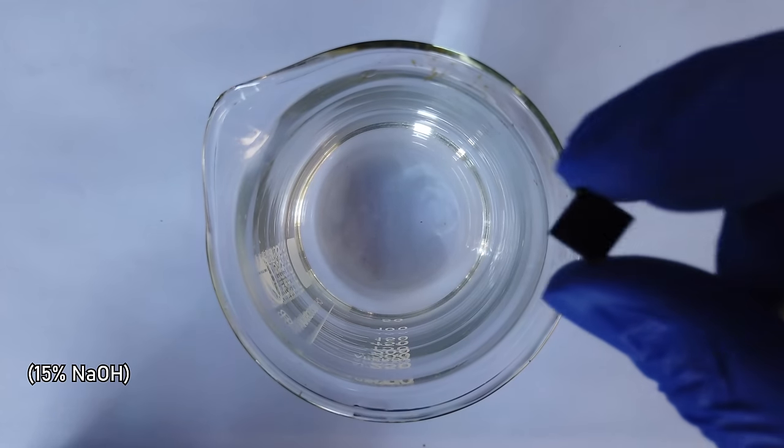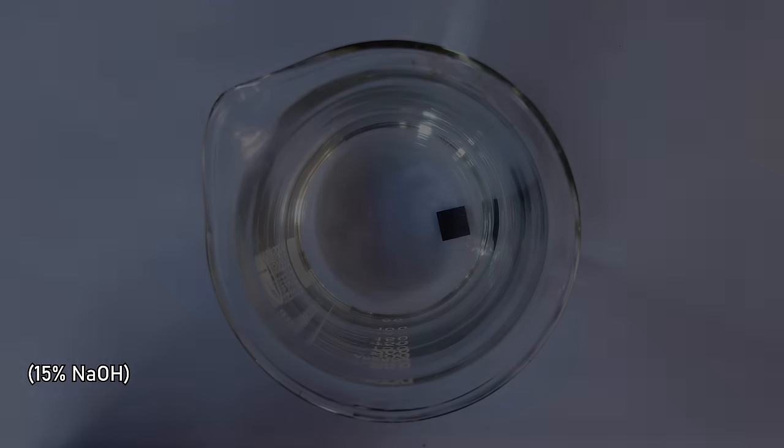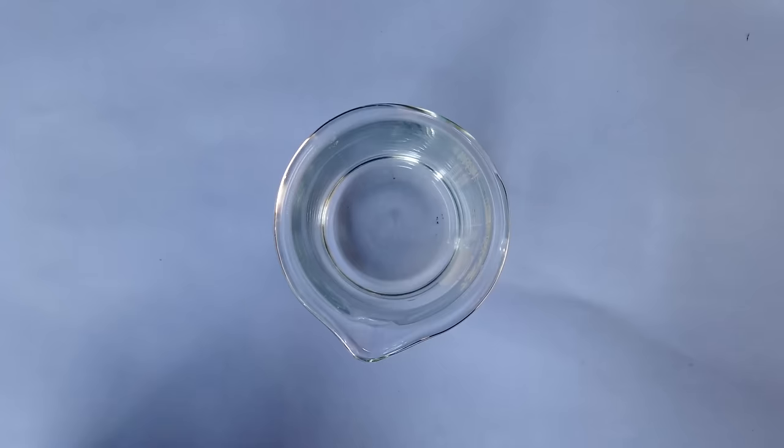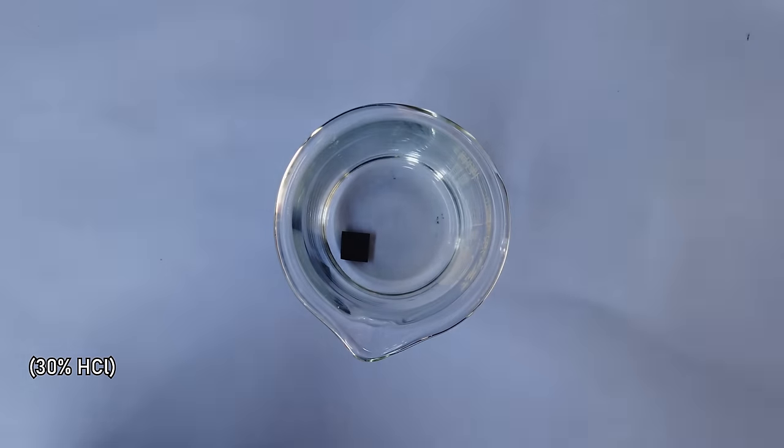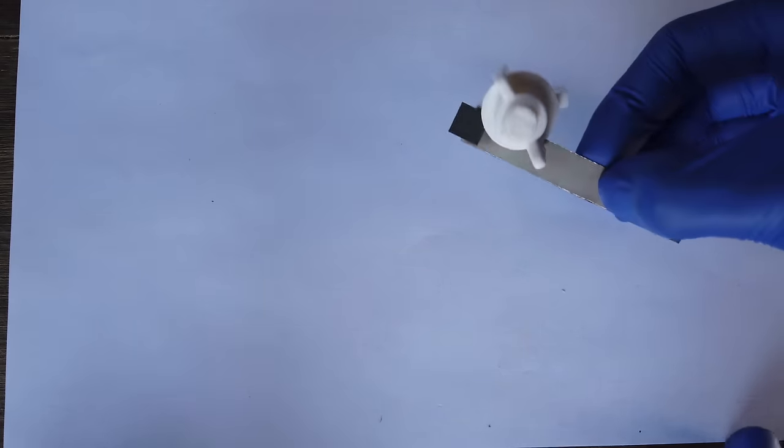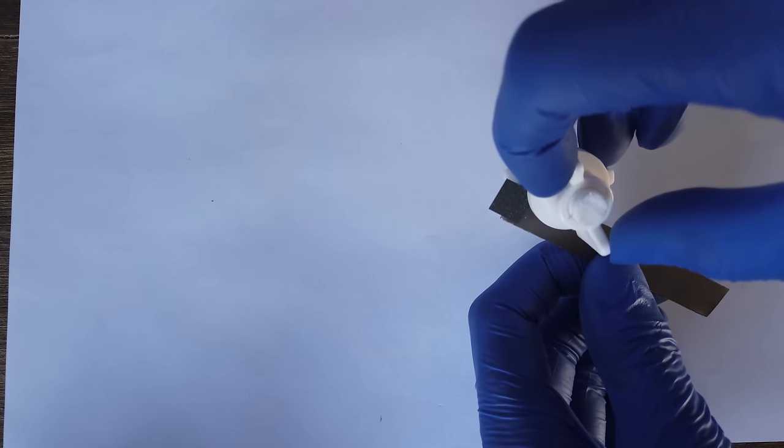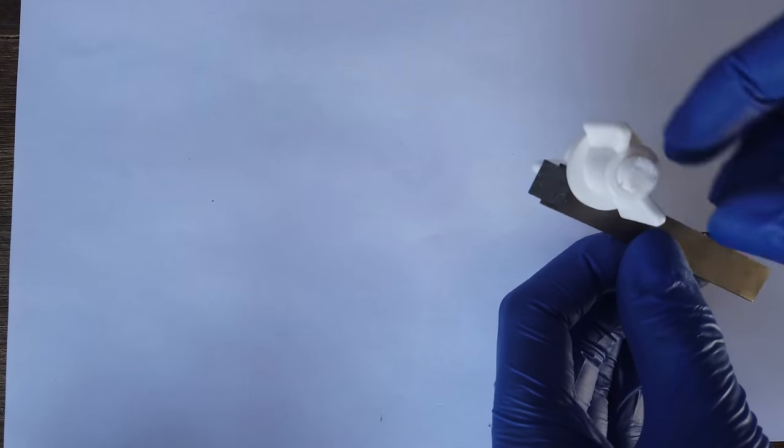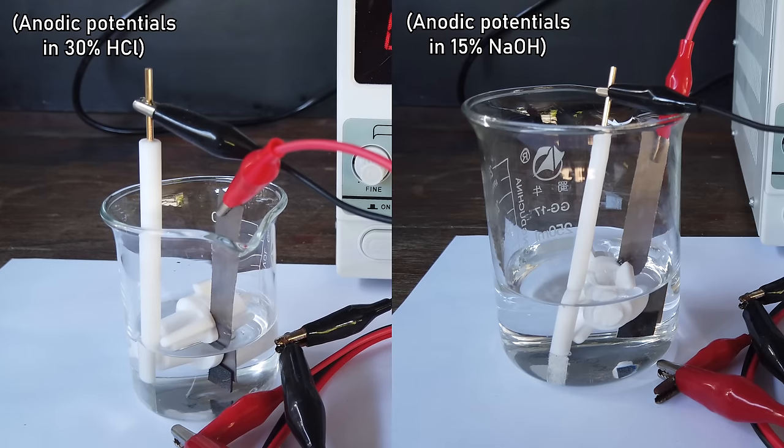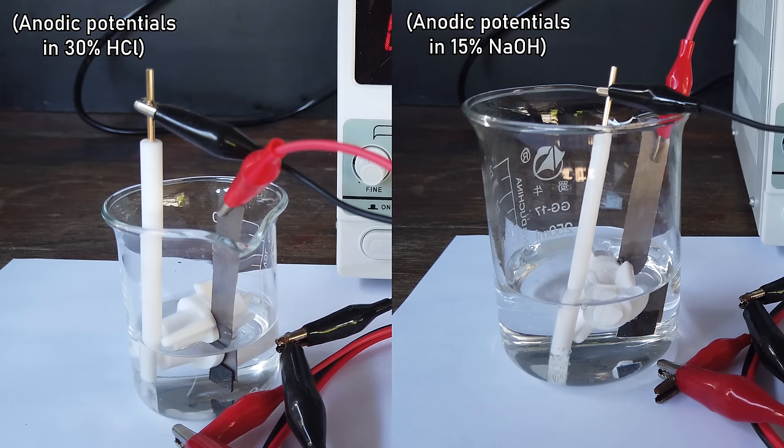We can chuck it in strong base, nothing. We can chuck it in strong acid, nothing. What other chemical tests are there that we could do? I suppose we can put it under strongly oxidizing potentials for both of these conditions as well. What I've done here is I've got a strip of titanium, a little thing to clamp down the diamond onto the end of it, and we've made ourselves a little boron-doped diamond electrode here. We also see no degradation in either case, even when using this thing as an anode.